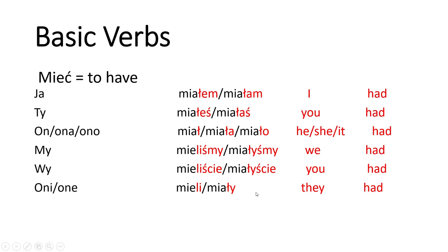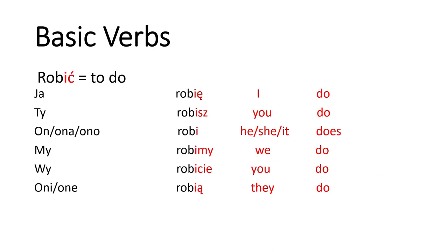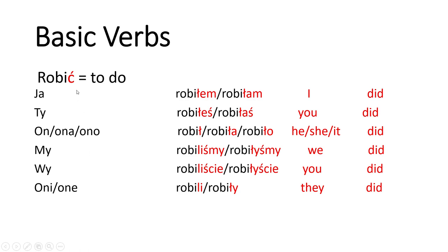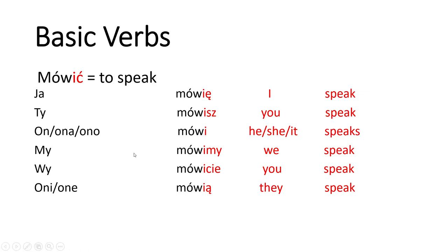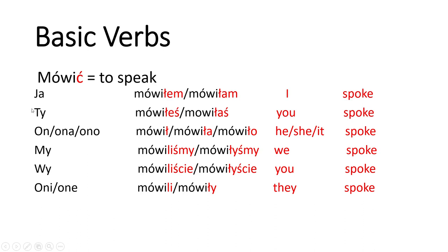Now 'robić' (to do/make) — this is the present tense from the previous video. For the past tense, the same rule applies: we remove '-ć' and add '-łem'/'-łam'. The full conjugation is: Robiłem, Robiłam, Robiłeś, Robiłaś, Robił, Robiła, Robiło, Robiliśmy, Robiłyśmy, Robiliście, Robiłyście, Robili, Robiły. I'm saying it so you get used to hearing and speaking it.